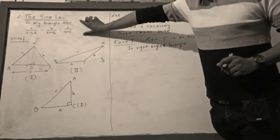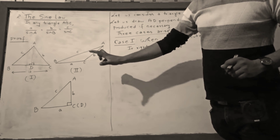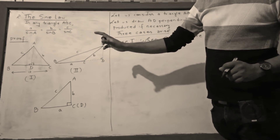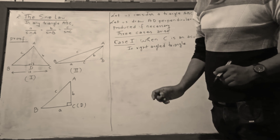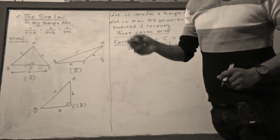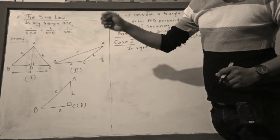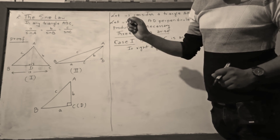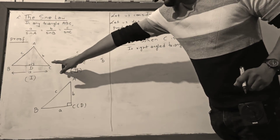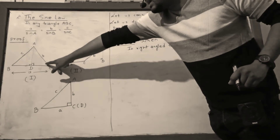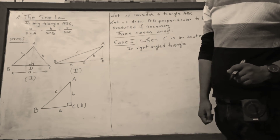Now for its proof, same like in cosine law, three cases arise depending on the size of each angle. Here also we consider angle C as our proof target. Case 1: when angle C is an acute angle.